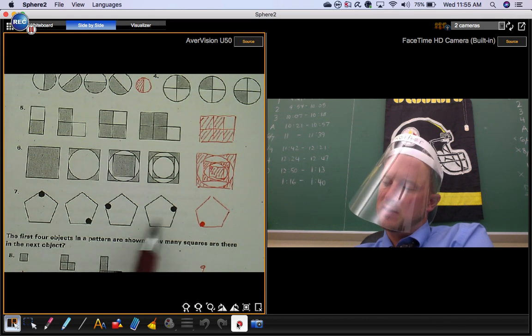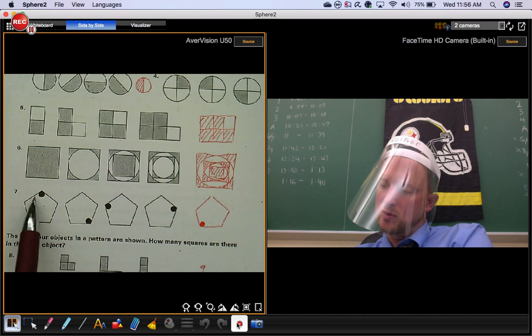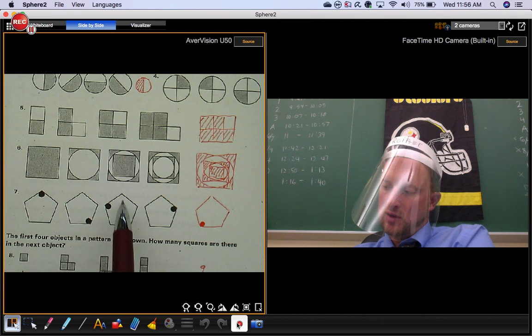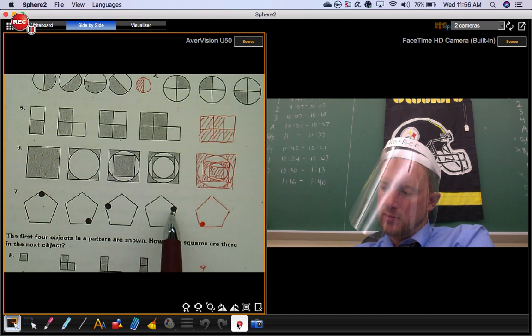Number seven, you've got these pentagons, and you have this little shaded circle that's kind of moving around in a clockwise fashion, but you're skipping a vertex each time. So if you're here, you're jumping this guy to go to here.